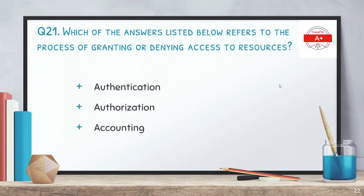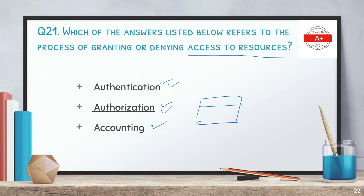Question 21: Which of the answers listed below refers to the process of granting or denying access to resources? The options are: authentication, authorization, and accounting. The correct answer is authorization. Once you are authenticated and log in, you are granted access to certain resources — this is authorization within the AAA security architecture.